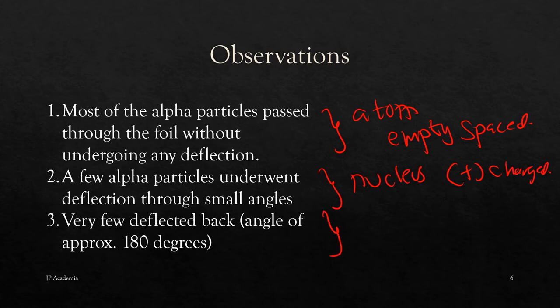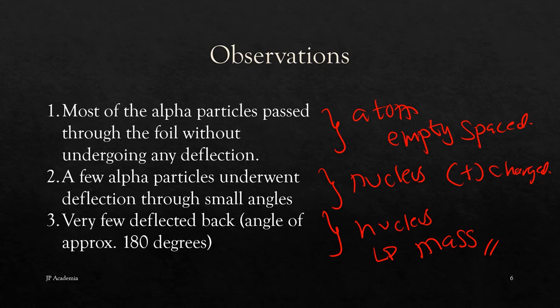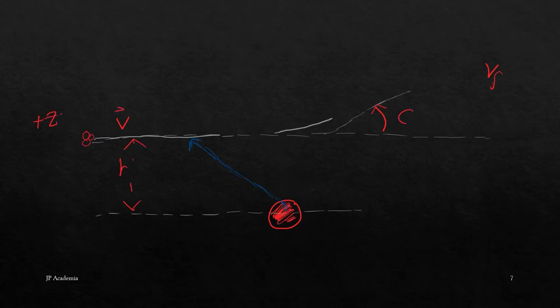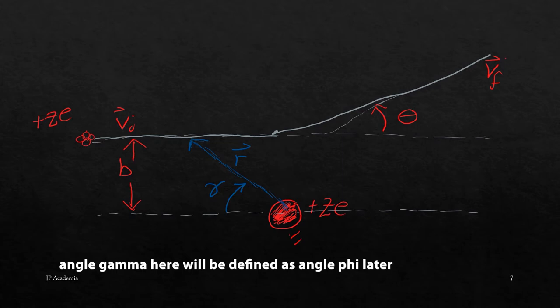The third observation is that there are very few alpha particles deflected by backscattering, or approximately 180 degrees, and this shows that the nucleus carries most of the atom's mass. So your alpha particle interacts with a massive nucleus. The atom has a small, dense, positively charged nucleus as shown in this illustration. It is surrounded by electrons to fill the atomic volume. Thus, larger scattering angles would be possible, especially when a projectile interacts with the target nucleus.